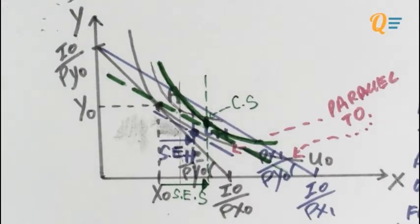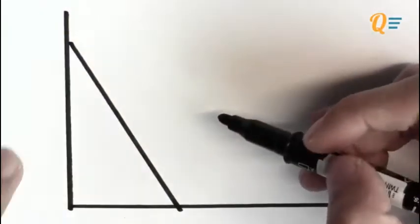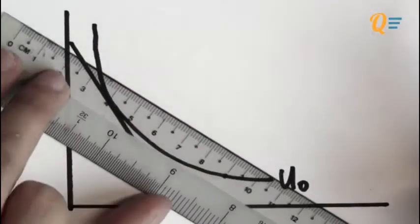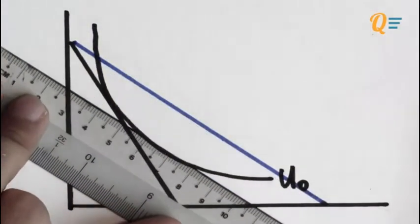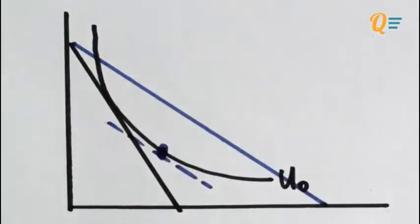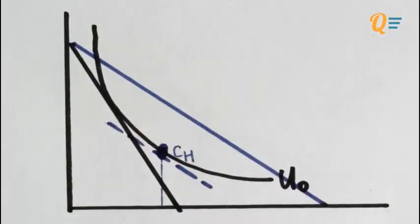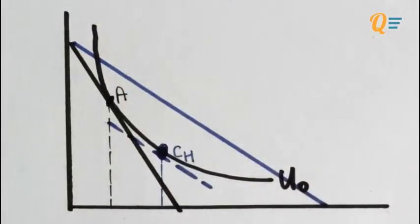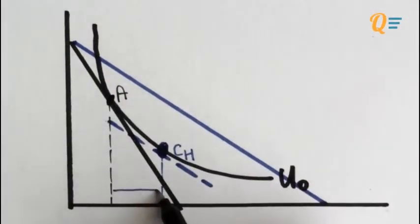As it is, I'm already proving that the statement is false. Let me draw the entire figure again on a fresh sheet of paper so you can see it more clearly. So when the price of X falls, this is what happens to the budget line. And this is my imaginary budget line to define CH. I'm going to define my SEH now.